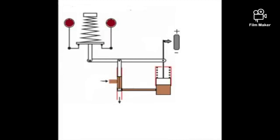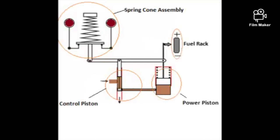Here is a basic working diagram of a hydraulic governor which consists of a spring cone assembly, a control piston, a power piston, and a fuel rack.